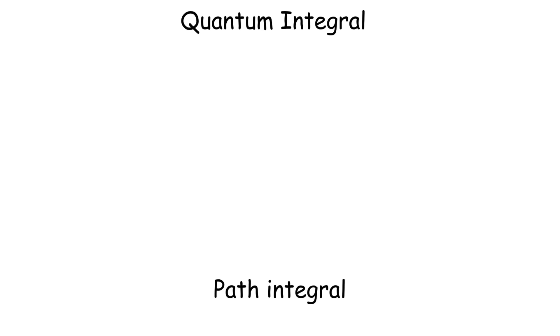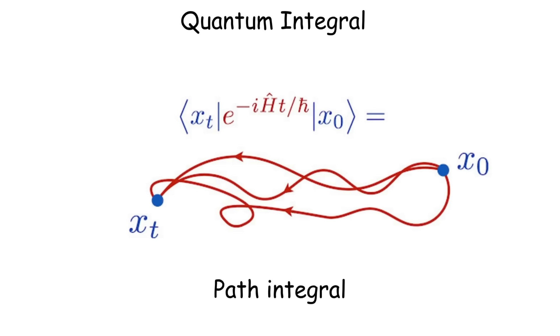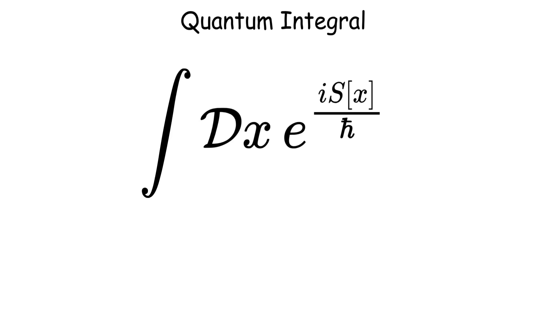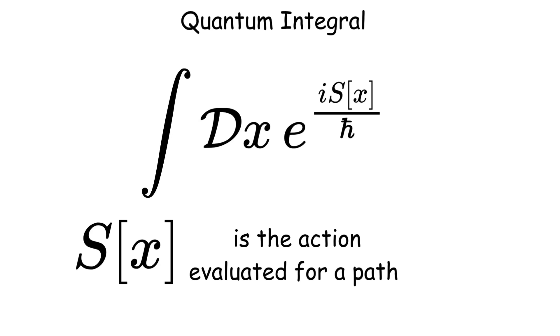Quantum integral, also called path integral. This sums over all possible paths a particle can take between two points, using the integral of e to the i S over h-bar, where S is the action functional, and you integrate over all possible paths.